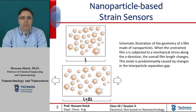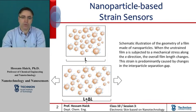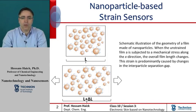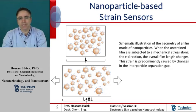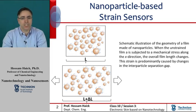Electronic conduction throughout nanoparticle films occurs via interparticle electron tunneling, where the tunnel current depends exponentially on the width of the tunnel barrier. This exponential dependence provides a sensitive detection mechanism for any parameter or process that changes the barrier width.